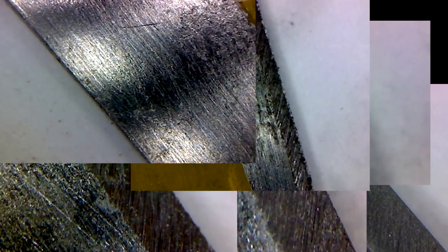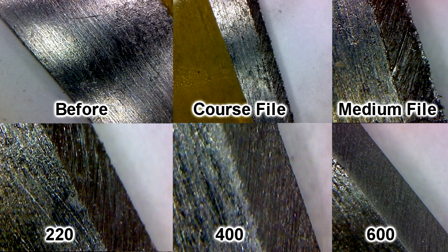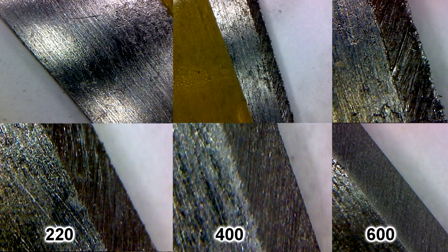Let's recap the images. Top left hand corner's the before, we have the coarse stone, the medium stone. That's the files on the bottom. We have the 220, we have the 400, and we have the 600 aluminum oxide. And it produced a wonderful edge.